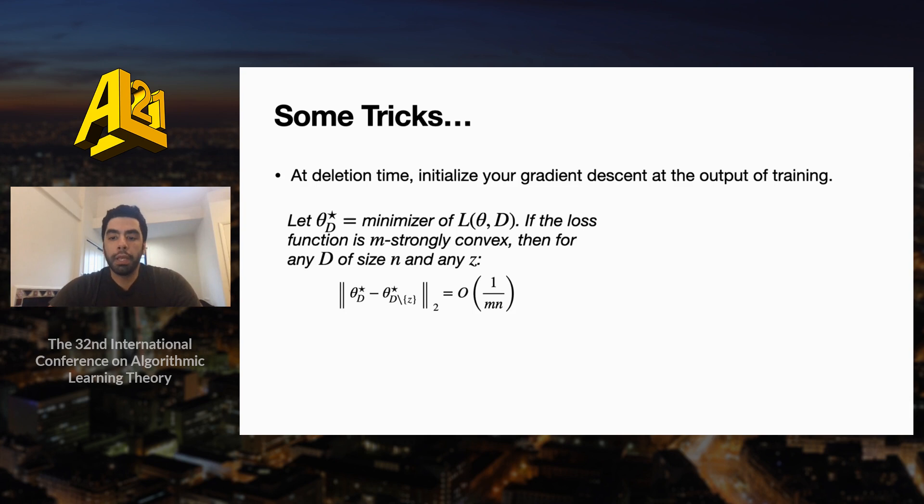So more formally, it is known that when the loss function is strongly convex with parameter μ, then the optimizers on two data sets that differ in only one element are within 1/(μn) of each other in L2 norm, where n is the size of the data set.